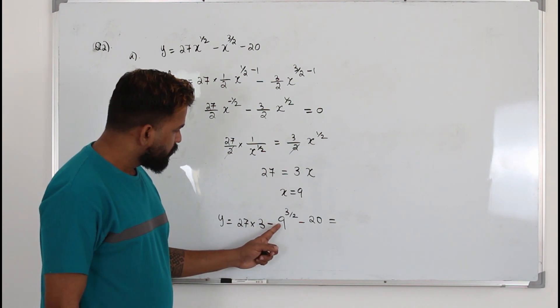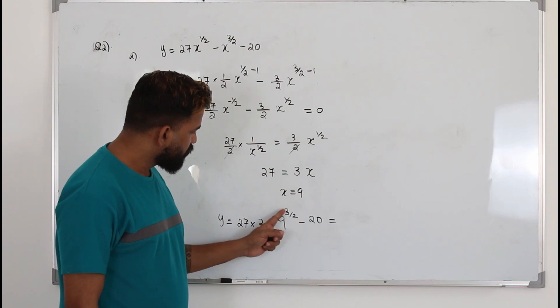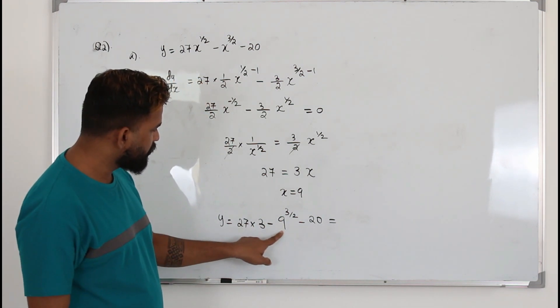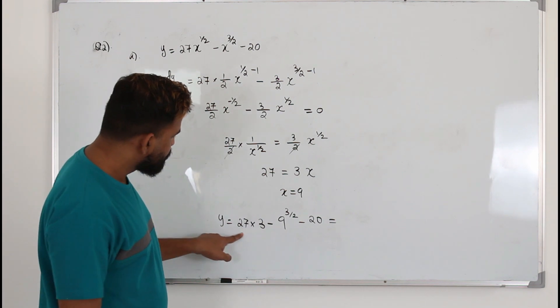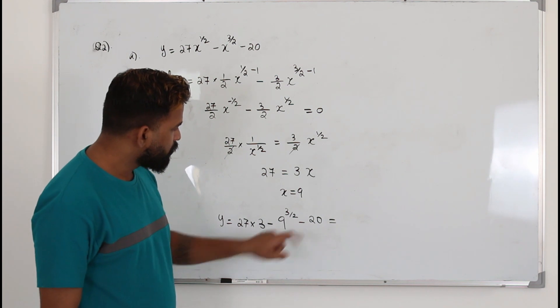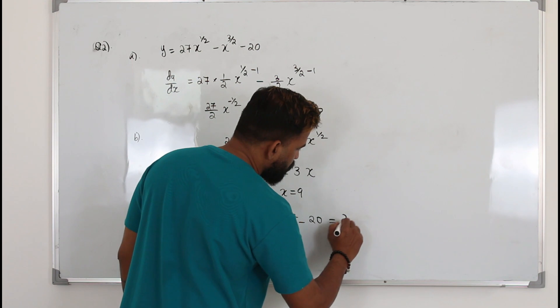9 power 3 over 2 is 3 squared power 3 over 2. 2 will be cancelled. 3 cube is 27. So 27 times 3 minus 27 is 27 times 2, which is 54. 54 minus 20, 34 if I'm not wrong.